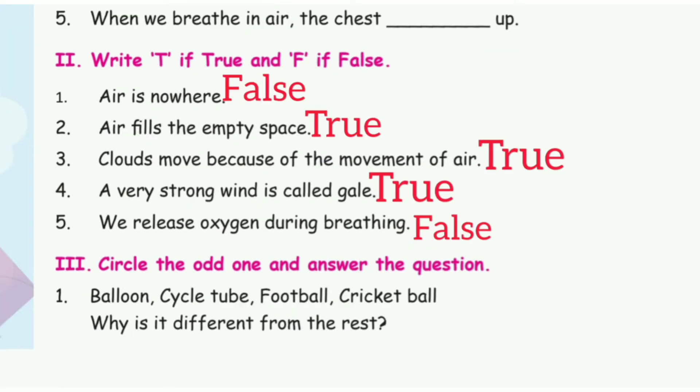Write true or false. First one, air is nowhere - the answer is false. Second one, air fills the empty space - the answer is true. Third one, clouds move because of the movement of air - the answer is true.